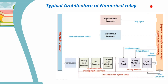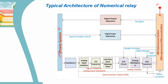In this tutorial we are going to understand the typical architecture or structure of the numerical relay. This is the structure of our relay — here is the power system which has voltage and current flowing in it, and here is the complete numerical relay with the CPU, which is the central processing unit of the numerical relay.